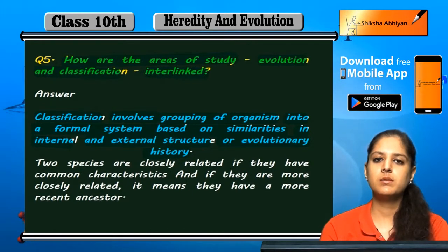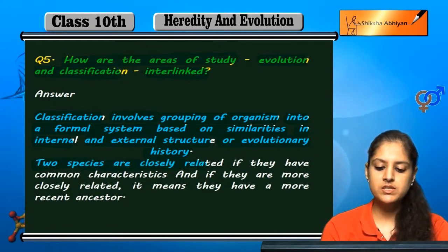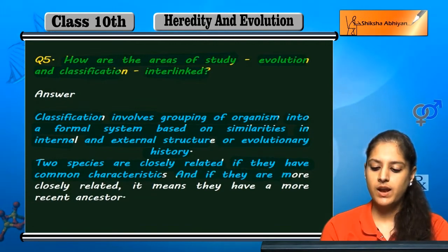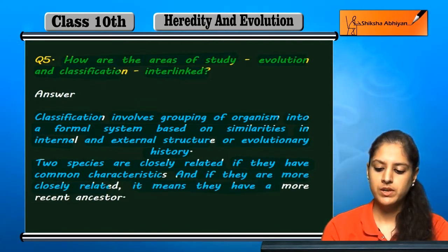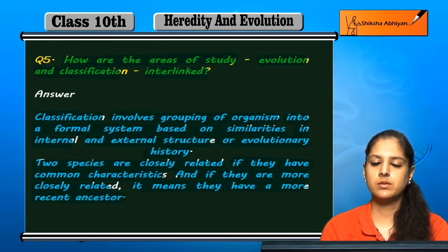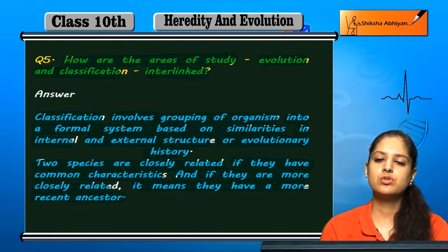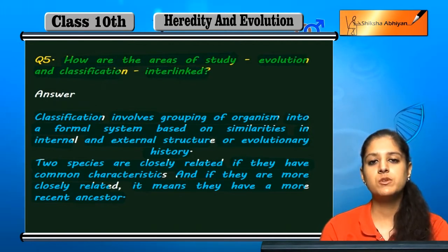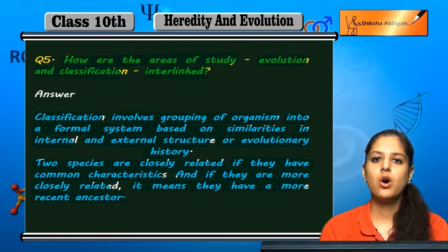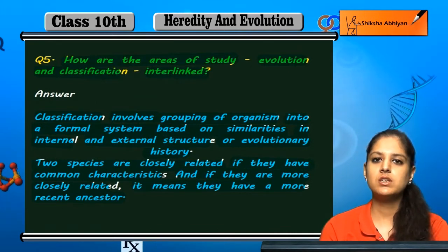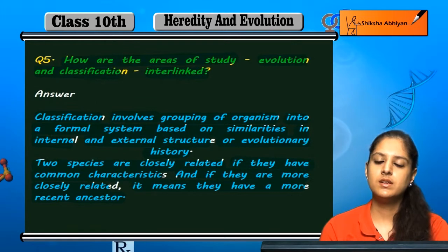Two species are closely related if they have common characteristics. If they are more closely related, it means they have a more recent common ancestor. If species share many common characteristics, they are closely related, and the ancestor they share is very recent rather than an ancient ancestor.